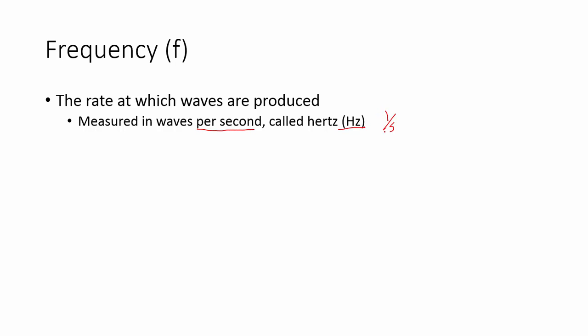It is measured in per seconds and those are called hertz. A hertz is one over s. So the unit is a hertz which is a per second. We use the symbol f to describe frequency and it is determined by the source.